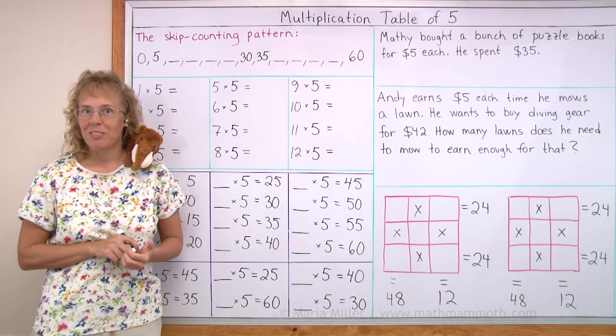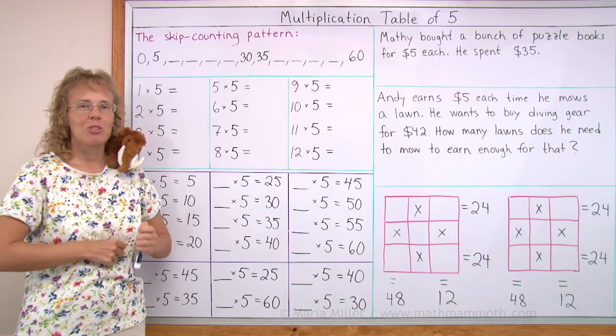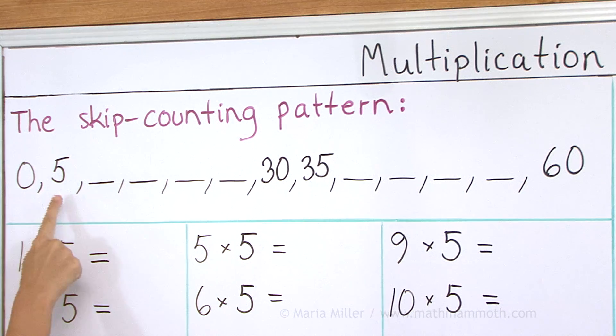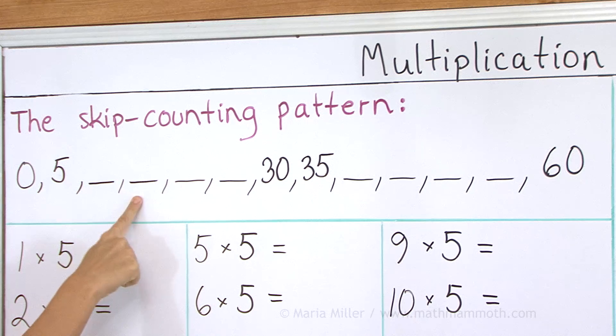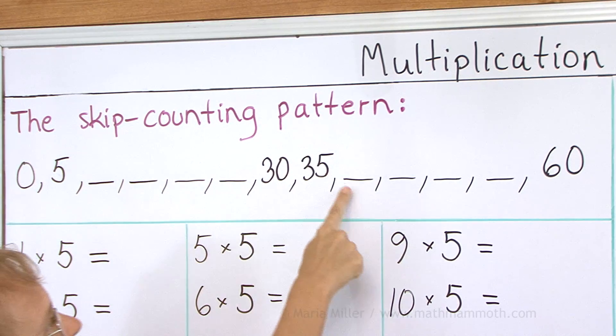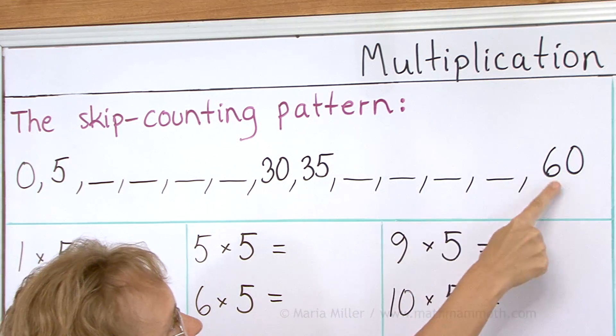Let's first study the skip counting pattern again. And you already know this because you already know how to skip count by 5s. We have 0, 5, 10, 15, 20, 25, 30, 35, 40, 45, 50, 55, and 60.